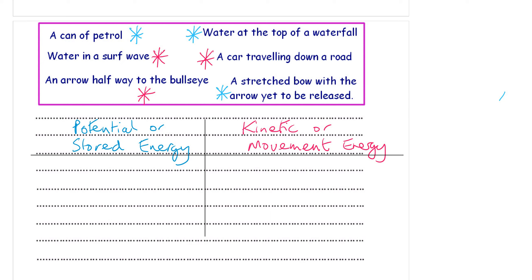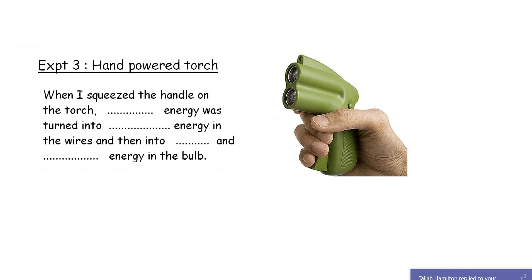So far, we've had three on each side. What you need to do is come up with another example of your own for potential or stored energy and another object that is possessing kinetic or movement energy. That will get you your eight marks out of eight. Write down what you've got, put a circle around it, and let's move on. We're going to look at a short video and then complete experiment three, the hand-powered torch.